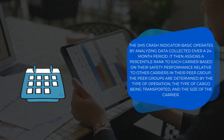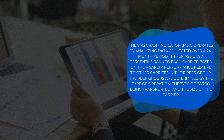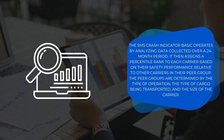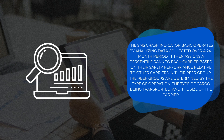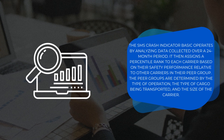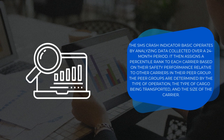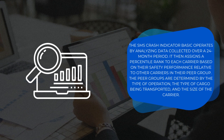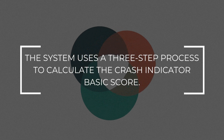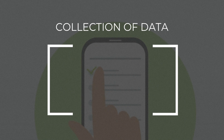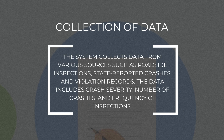The SMS Crash Indicator BASIC operates by analyzing data collected over a 24-month period. It then assigns a percentile rank to each carrier based on their safety performance relative to other carriers in their peer group. Peer groups are determined by the type of operation, the type of cargo being transported, and the size of the carrier. The system uses a three-step process to calculate the Crash Indicator BASIC score. Step one is collection of data: the system collects data from various sources such as roadside inspections, state-reported crashes, and violation records.